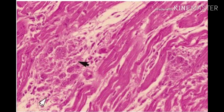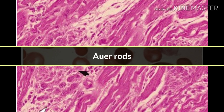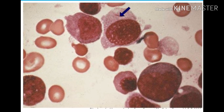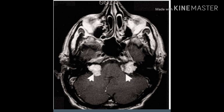Here you can see the granuloma of rheumatic fever, also known as Aschoff bodies, and you can also see multiple giant cells inside this granuloma. This is the Auer rods of the APL variant of acute myelogenous leukemia — these are myeloperoxidase cytoplasmic inclusions and the patient will usually present with features of disseminated intravascular coagulation.